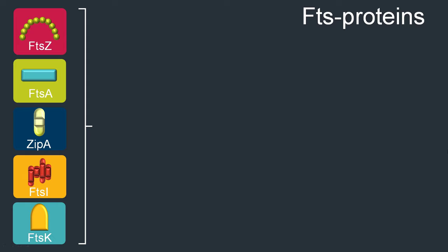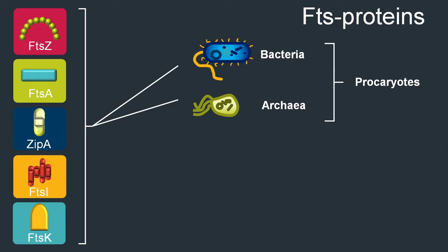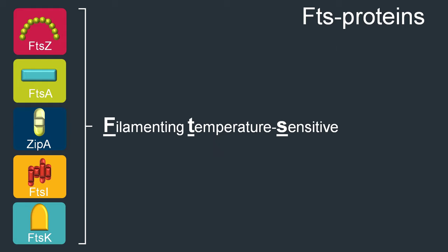Essential proteins for cell division are the so-called FTS proteins, found in basically all bacteria. They also exist in many archaea, the second prokaryotic domain of life, and can even be found in chloroplasts or mitochondria of eukaryotic cells, showing the evolutionary connection of these organelles to bacteria. FTS stands for filamenting temperature sensitive, going back to their discovery in the 1960s, when scientists observed that E. coli cells lacking these FTS genes failed to divide at higher temperatures and instead grew as long filaments, unable to separate into two daughter cells.